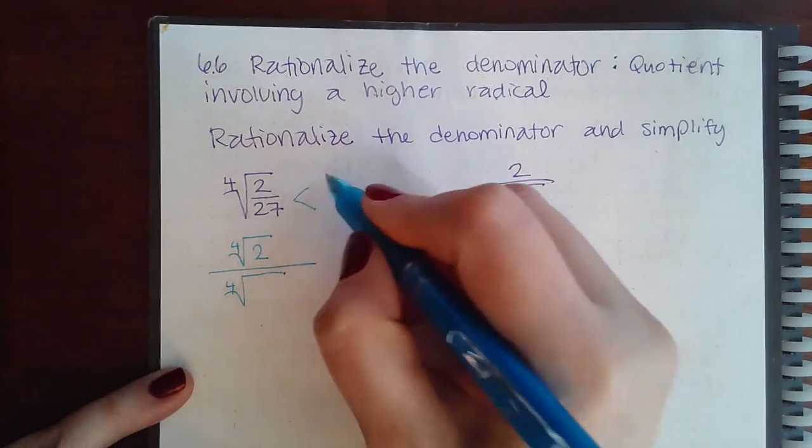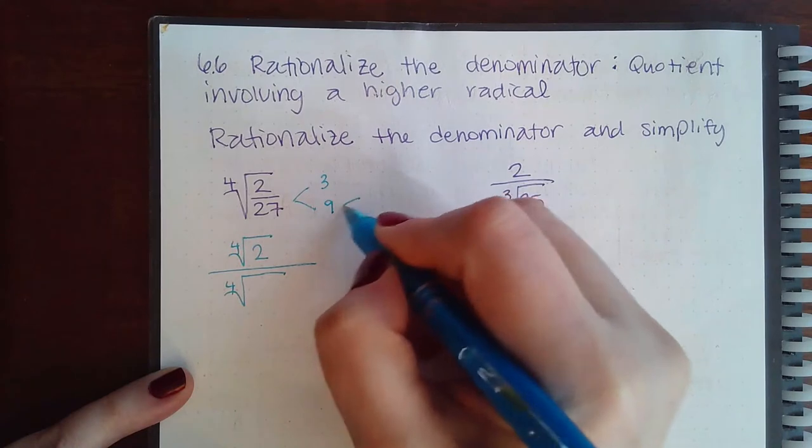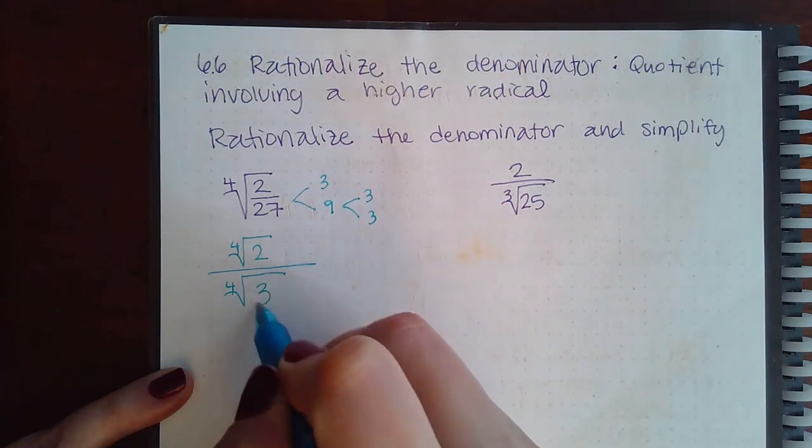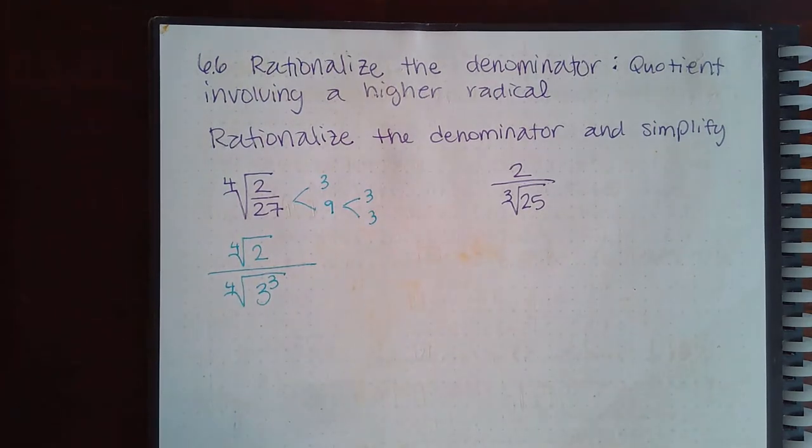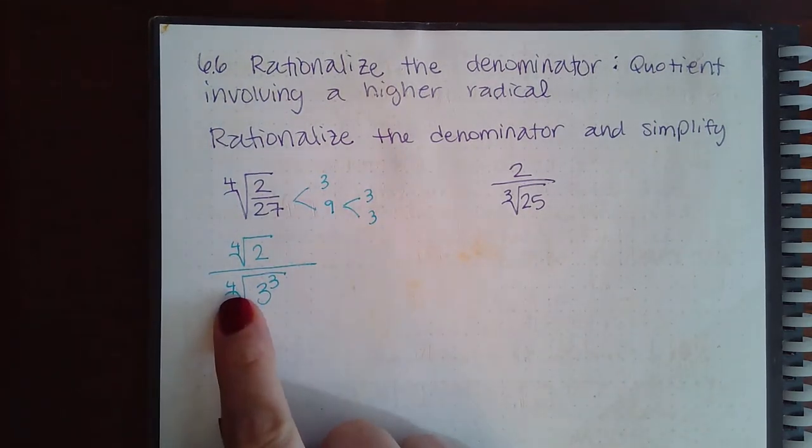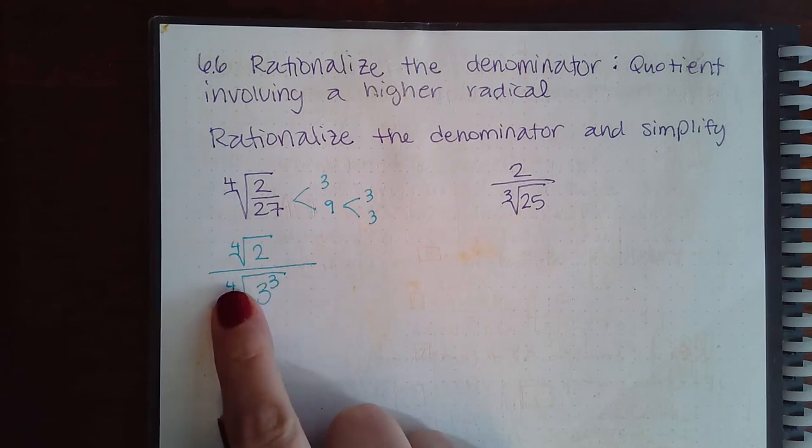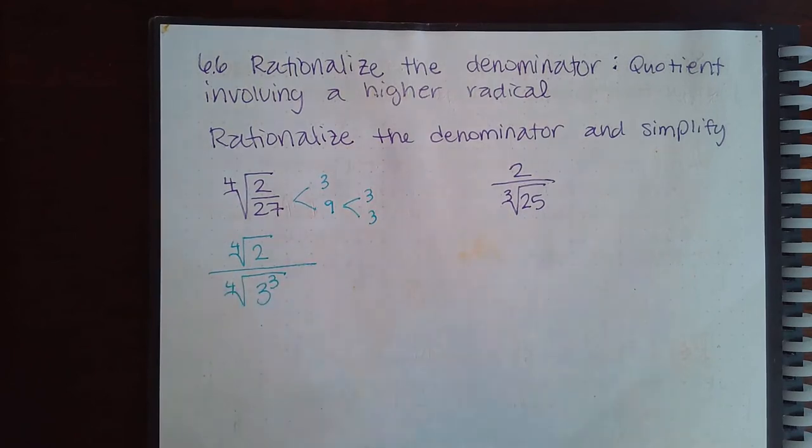27 is 3 times 9 and 9 is 3 times 3, so the prime factorization would be 3 to the third power. Now I need a fourth root, so how many more threes do I need? If I've got three of them, how many more do I need so that I can cancel out the fourth root?